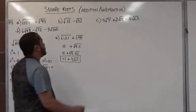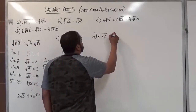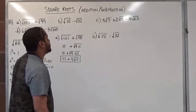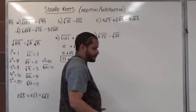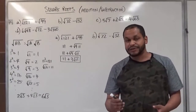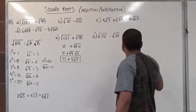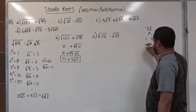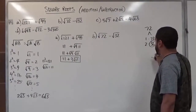Now let's move on to Part B: the square root of 72 minus the square root of 32. We're looking for two factors of each number that include the largest perfect square. Looking at 72, you might think of 9 times 8, but that's not the largest perfect square factor. So let's list the factors of 72, starting with 1 and 72.